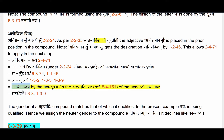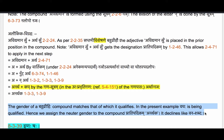The ending letter pa of the affix Kap is it by 1.3.3 Halantyam and takes lopaha by 1.3.9 Tasya Lopaha. So we get the final compound Pratipadikam as Anarthaka. We know that the gender of a Bahubrihi compound is that of which it qualifies — in the present example Vachaha is being qualified, hence we assign the neuter gender to the compound Pratipadikam Anarthaka, which declines like Mana Shabdaha. The Prathama Ekavachanam is Anarthakam.